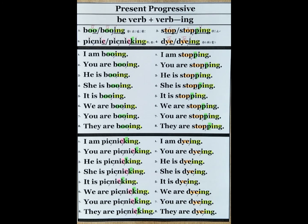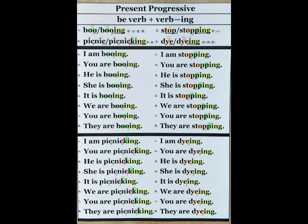Number 4: if the end of the verb is Y-E, we just add I-N-G. For example, die — dying. I am dying. You are dying. He is dying. She is dying. It is dying. We are dying. You are dying. They are dying.